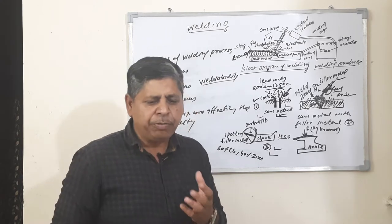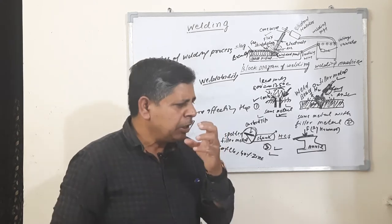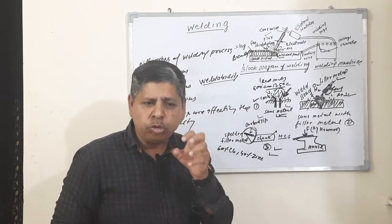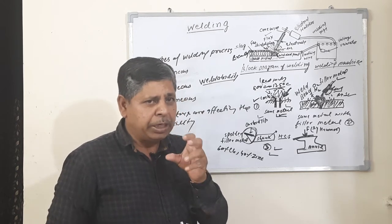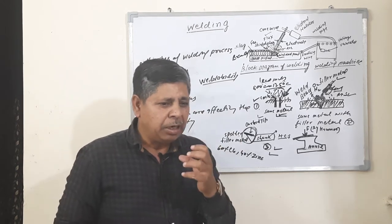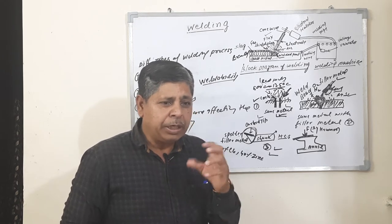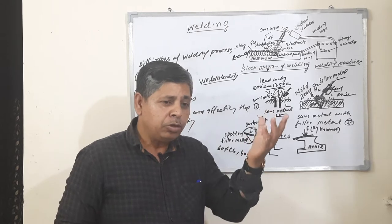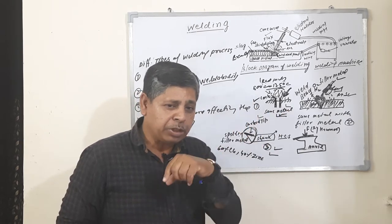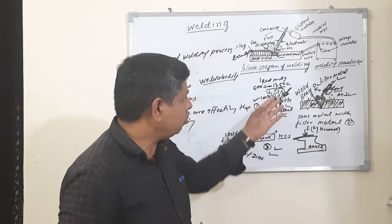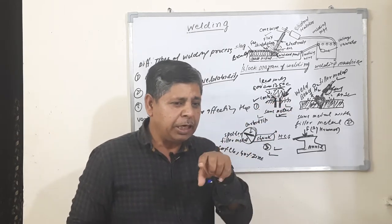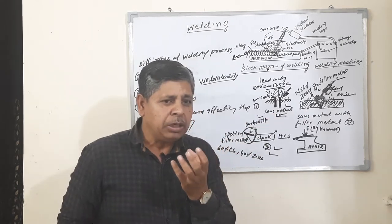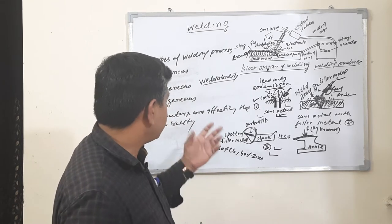Before starting welding, you should keep in mind whether the metal is suitable for welding or not. The material should be ductile, not brittle or hard. If the material is brittle or hard, you cannot perform welding directly. You should first go through another process like annealing — the hard material is annealed to make it suitable for welding. The welding material should be ductile.